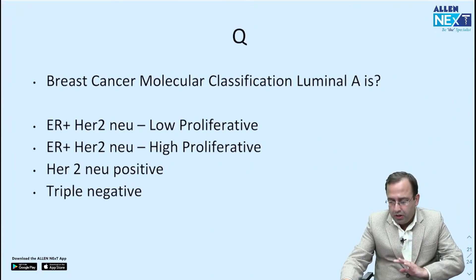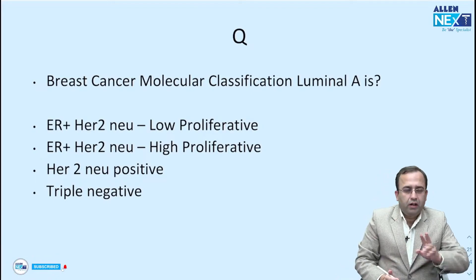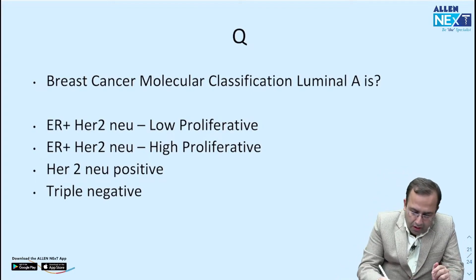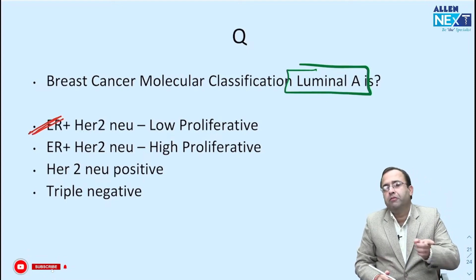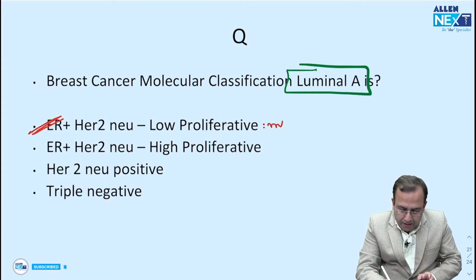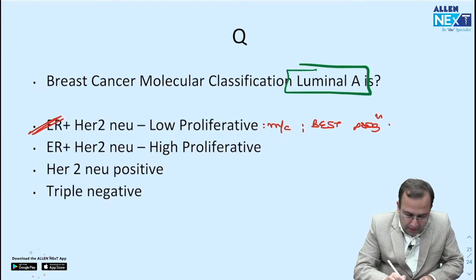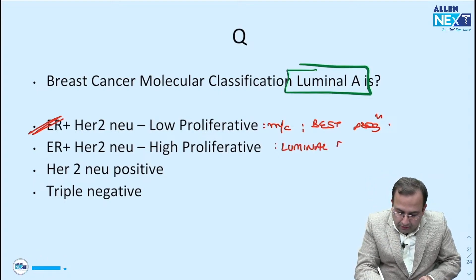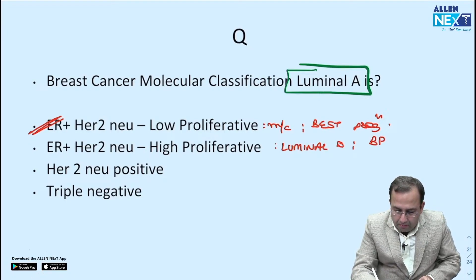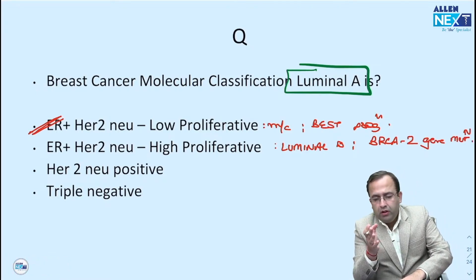Again a simple straightforward question. Luminal A is ER positive, HER2 negative, low proliferative breast cancer — most common, best prognosis. Luminal B is ER positive, HER2 negative, high proliferative — associated with BRCA2 gene mutation. The answer plain and simple was A. Triple negative is associated with BRCA1 gene mutations.